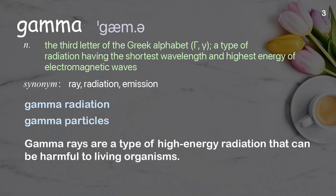Gamma: the third letter of the Greek alphabet; a type of radiation having the shortest wavelength and highest energy of electromagnetic waves. Examples: gamma radiation, gamma particles. Gamma rays are a type of high-energy radiation that can be harmful to living organisms.